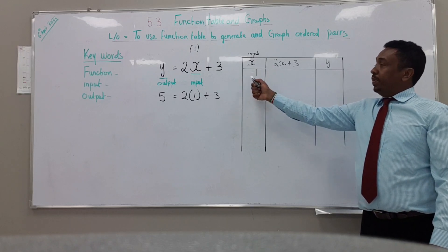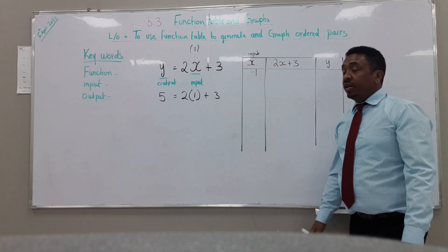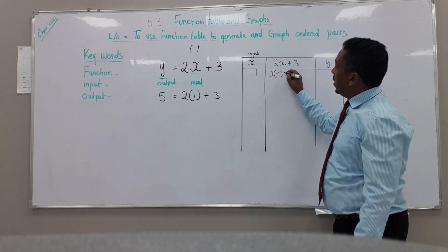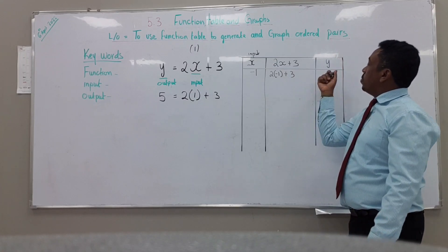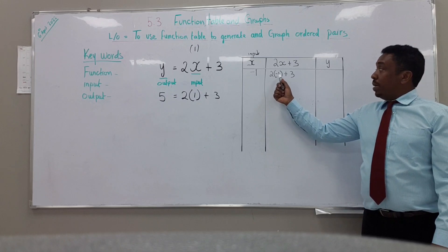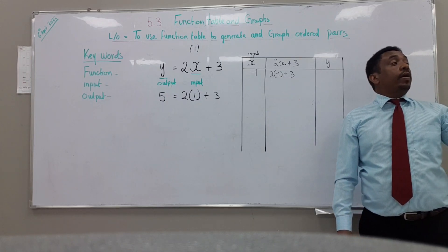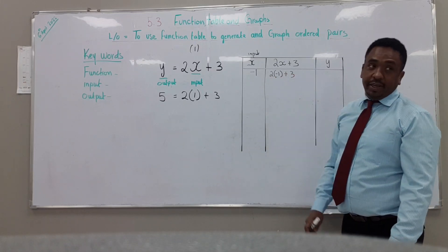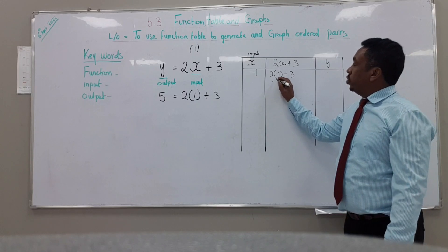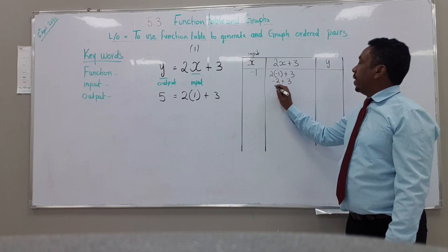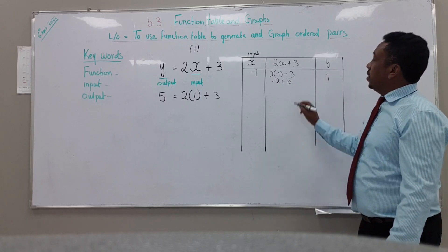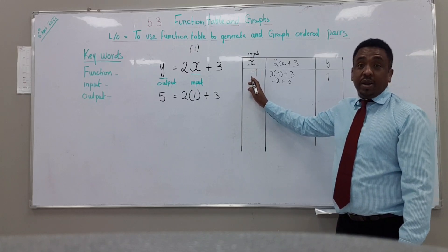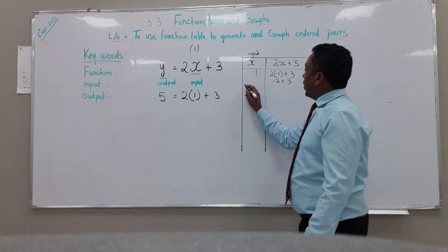So let's do the first one. What is x? What should we replace x with? Minus one. So we put 2 times (minus one) plus 3. 2 times minus one is minus 2, plus 3 — what will minus 2 plus 3 be? That will become 1. So our first input is minus one and the outcome is 1.